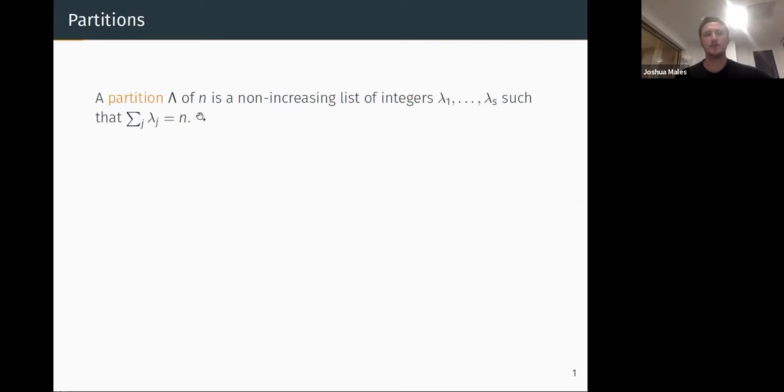So, some intro and definitions. I guess everyone here already knows this, but a partition lambda of some natural number n is some non-increasing list of integers lambda 1 to lambda s, such that their sum is n.